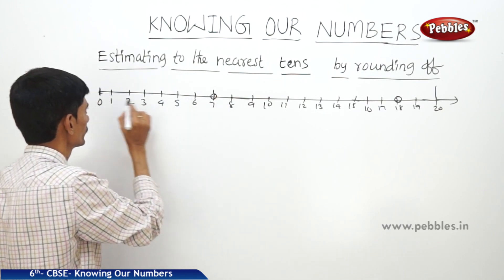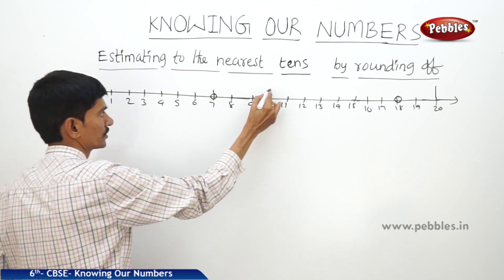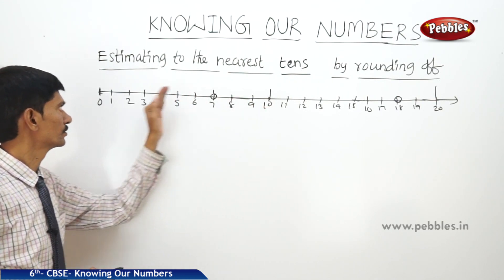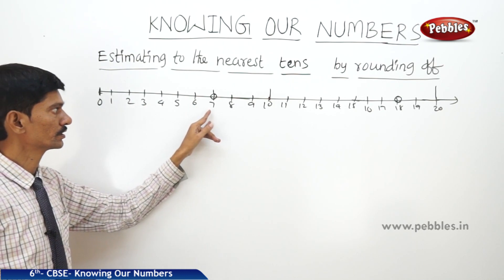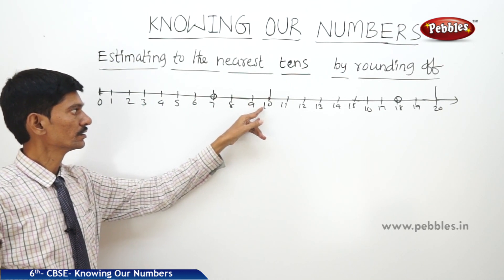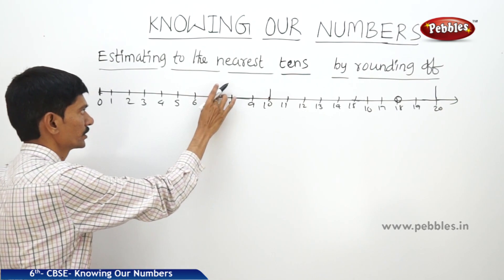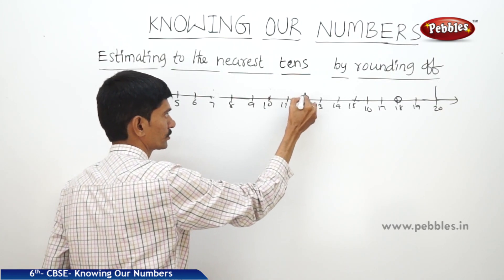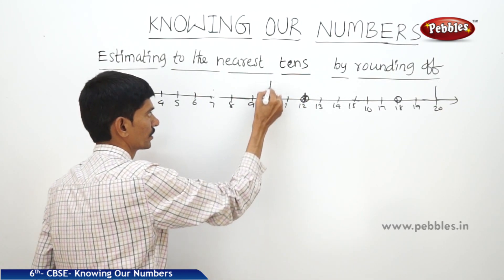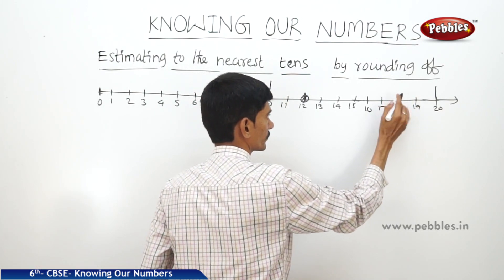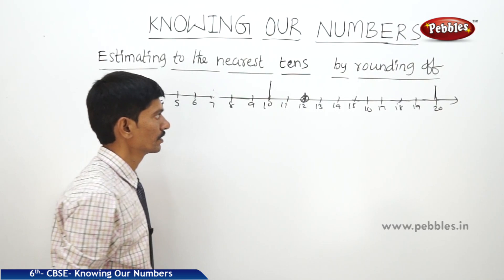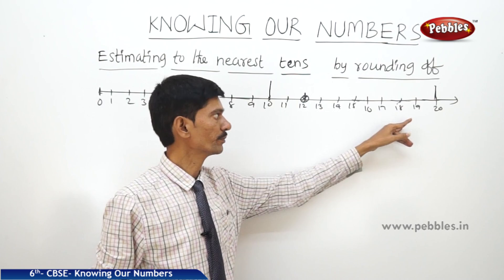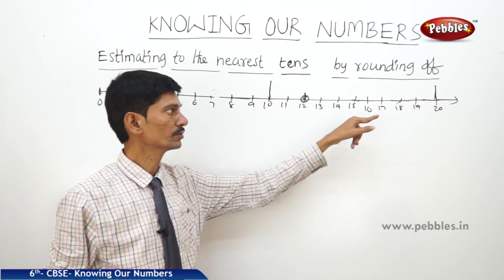7 lies between 0 and 10. The number 7 is closer to 10 than to 0, so then we can approximate it as 10 by rounding it off. And if you take the number 12, it lies between 10 and 20.